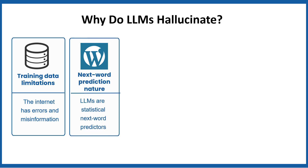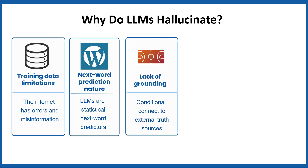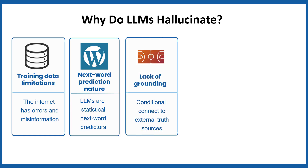Next word prediction nature: at their core, LLMs are statistical next word predictors. If asked what is the capital of France, the probability of Paris is high. But when asked what is the tallest mountain in Europe, if training data was inconsistent, it might generate Mont Blanc or XYZ — sometimes wrong, depending upon phrasing of the question. Lack of grounding: most LLMs don't connect directly to external truth sources such as Wikipedia or databases. They rely only on patterns in text. Without grounding, they can't verify accuracy.